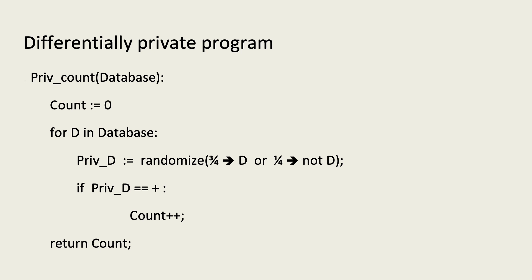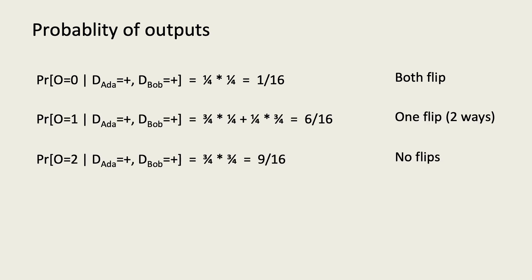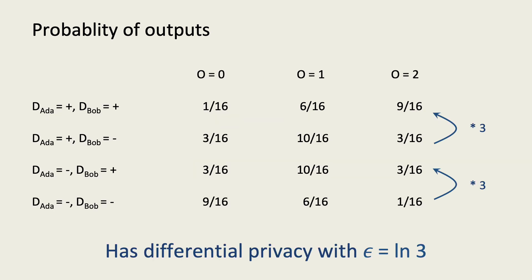We can calculate the probability of each possible output given that both Ada and Bob report having the mutation. For example, to produce a privatized count of zero would require both data points to be flipped by the algorithm, which can only happen with a probability of 1 in 16. We can repeat this for the other possible outputs. Doing these calculations for the other possible inputs produces a table for all the inputs and outputs.